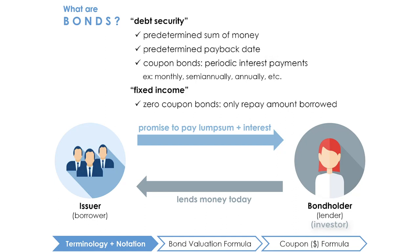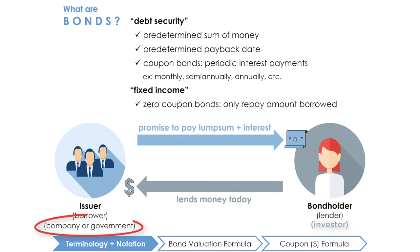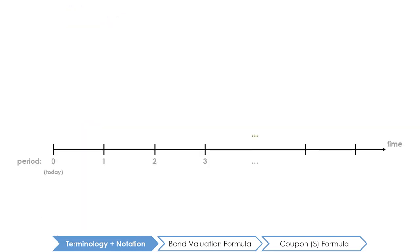The other type of bonds are known as zero coupon bonds, which, like their name suggests, do not make any intermittent payments of interest and only repay the amount borrowed on the predetermined date in the future. When people talk about bonds they are generally referring to coupon paying bonds, so the bond study in these videos will refer to coupon paying bonds unless specifically told otherwise. Regardless of whether the bond pays coupons or not, you can think of bonds as a loan or an IOU from the issuer — such as a company or the government — to the bond holder, that can be traded in the public debt markets.